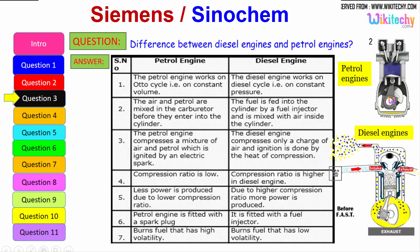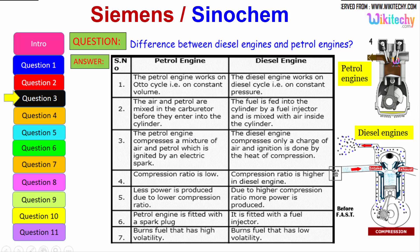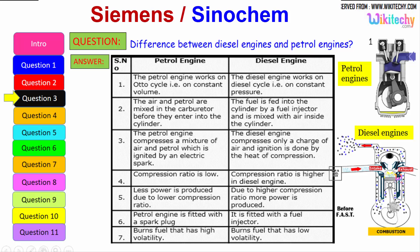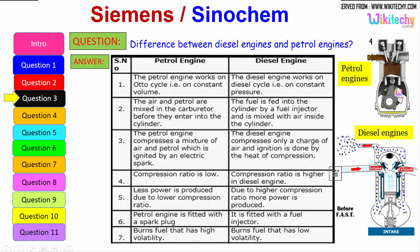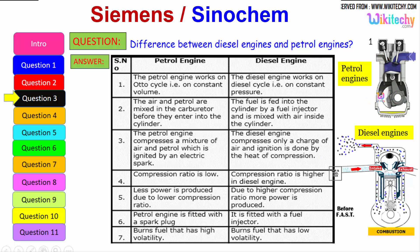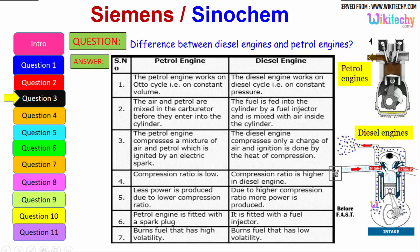The petrol engine compresses a mixture of air and petrol, which is ignited by an electrical spark. The diesel engine compresses only a charge of air, and ignition is done by the heat of compression. The petrol engine has a lower compression ratio, producing less power, whereas the diesel engine has a higher compression ratio, producing more power.